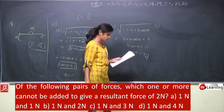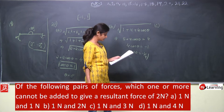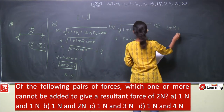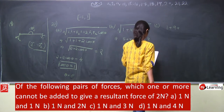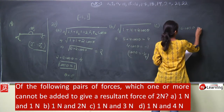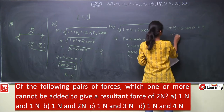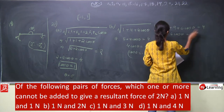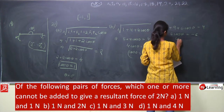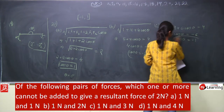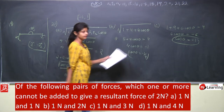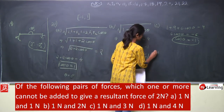Third pair: 1 newton and 3 newton. The expression gives 1 + 9 + 6·cos θ = 4, so 6·cos θ = −6, giving cos θ = −1. Since cos θ can equal −1, this value is also acceptable. So this pair can also give a resultant of 2 newtons.